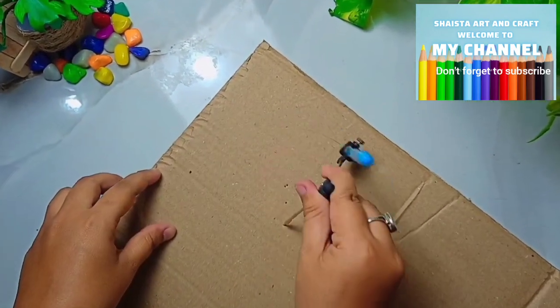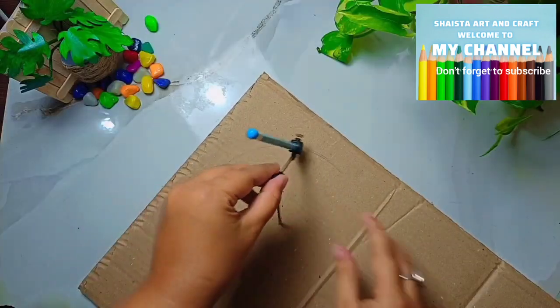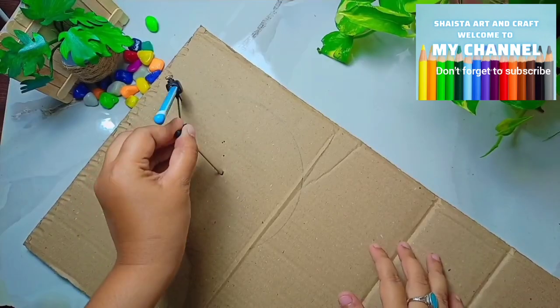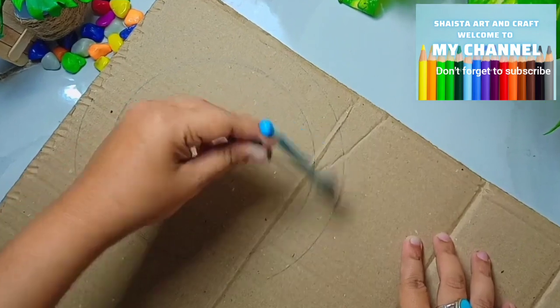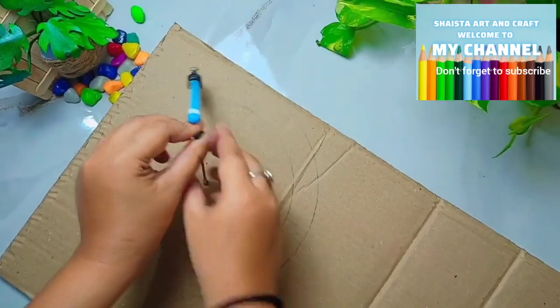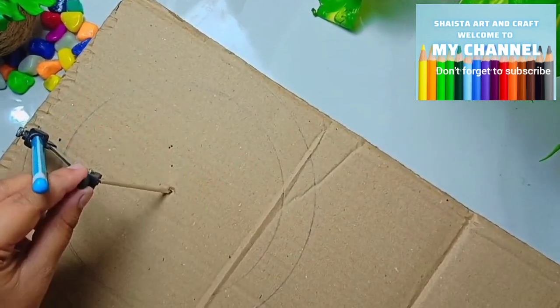First we will make a small circle, then we will make a small piece of compass. We will use the center part and now we will start cutting.